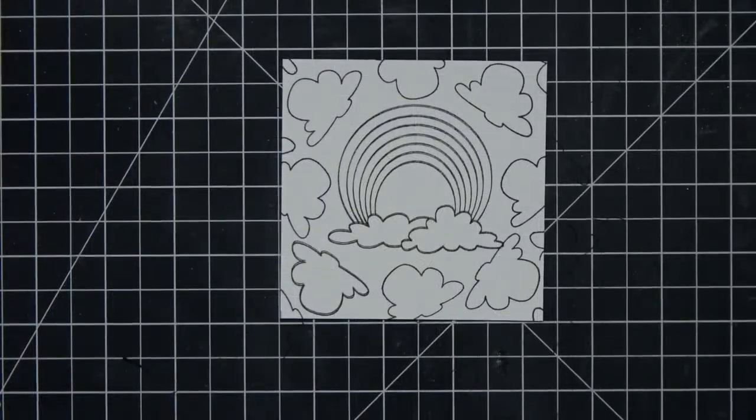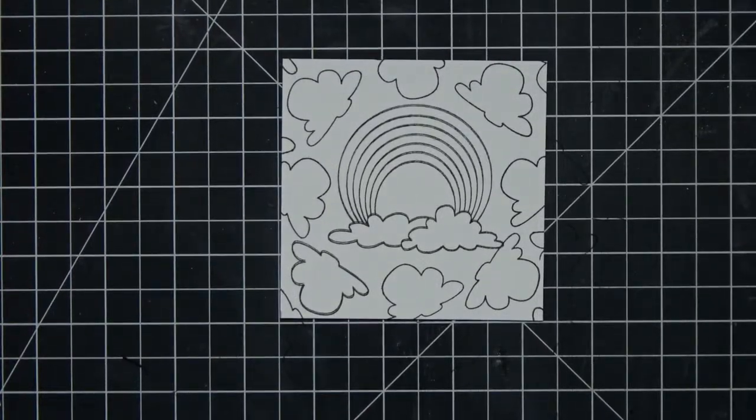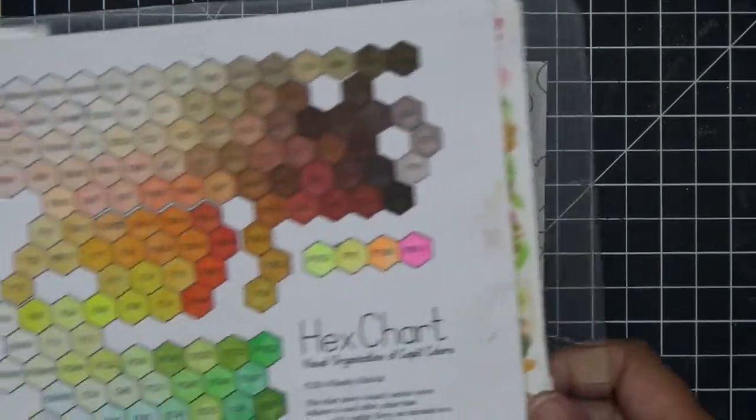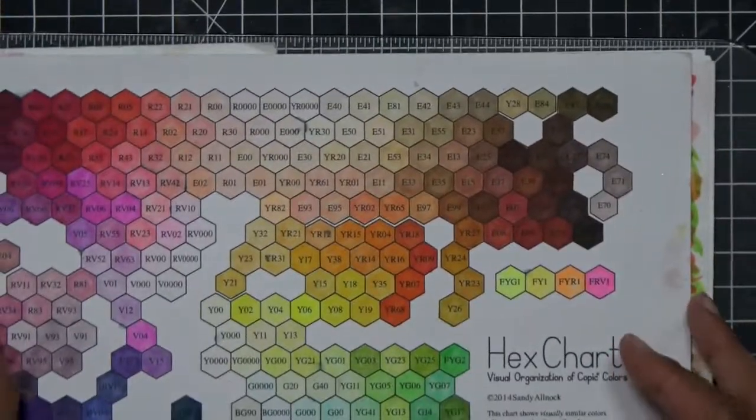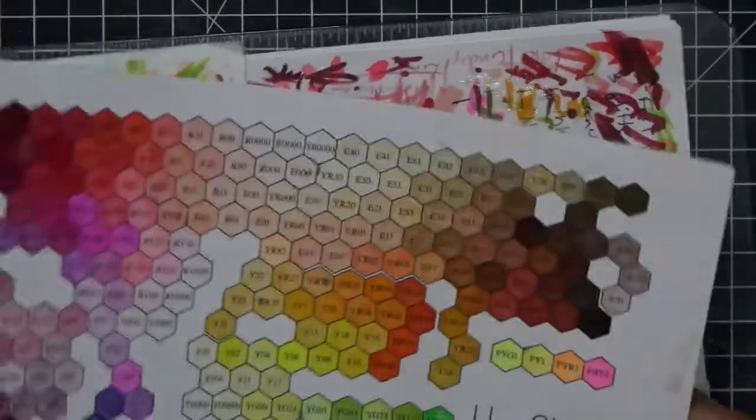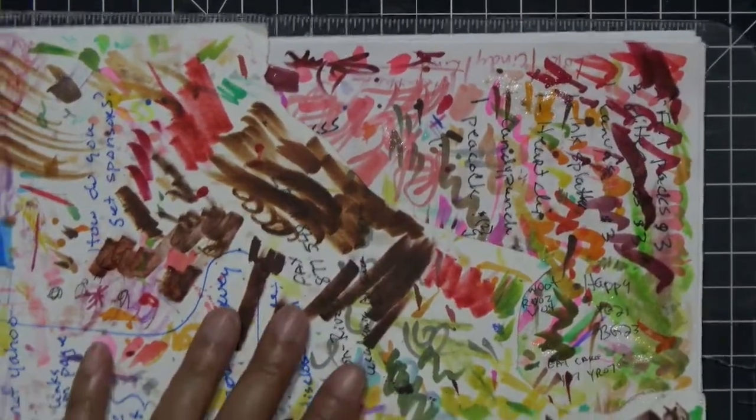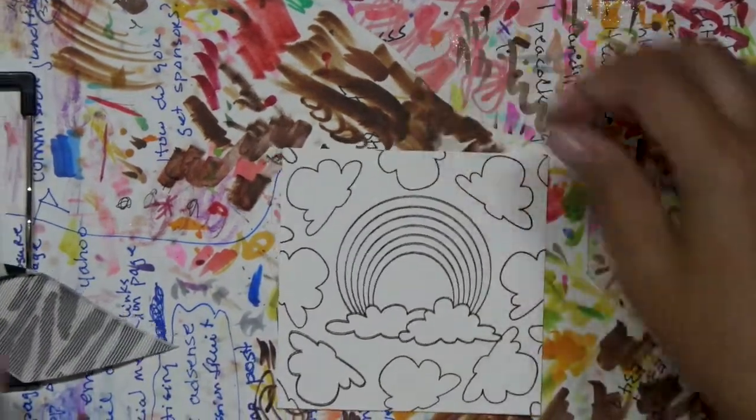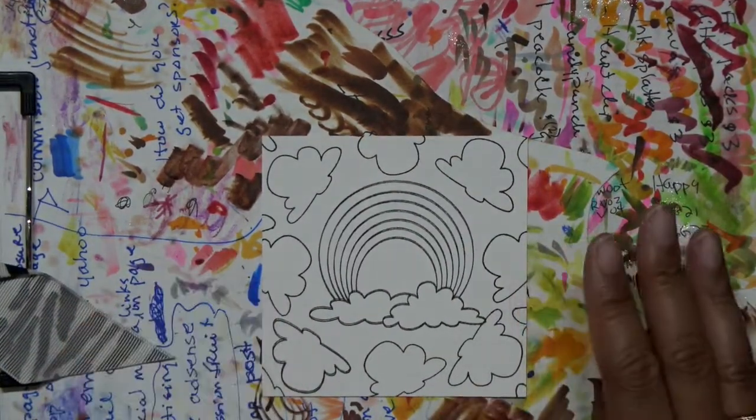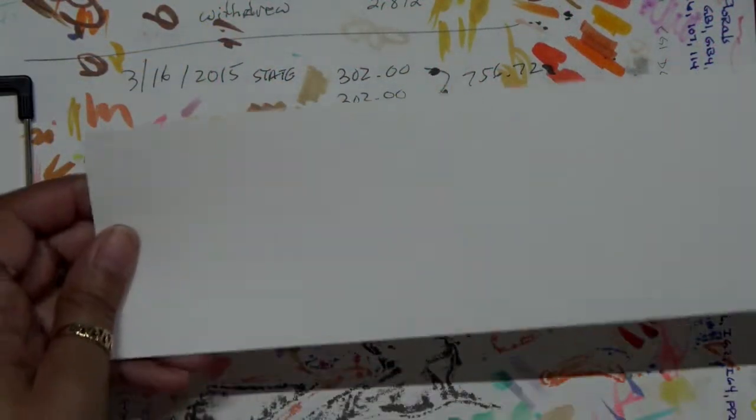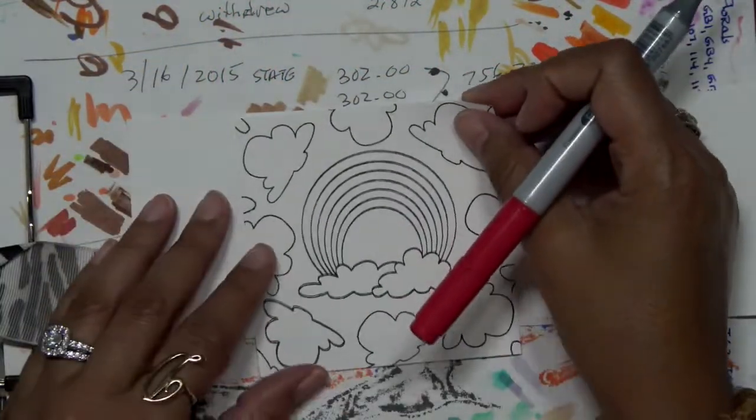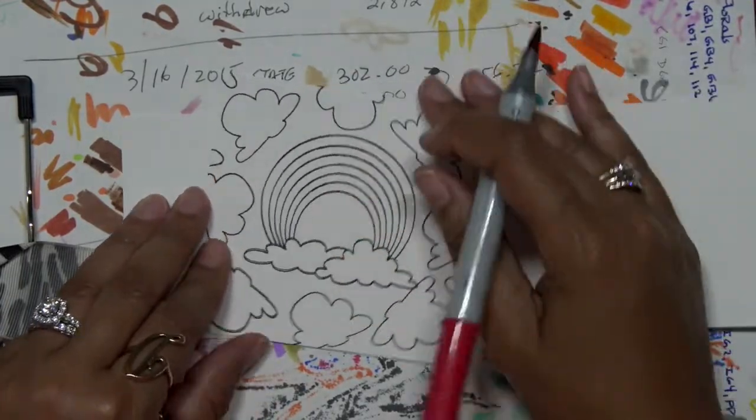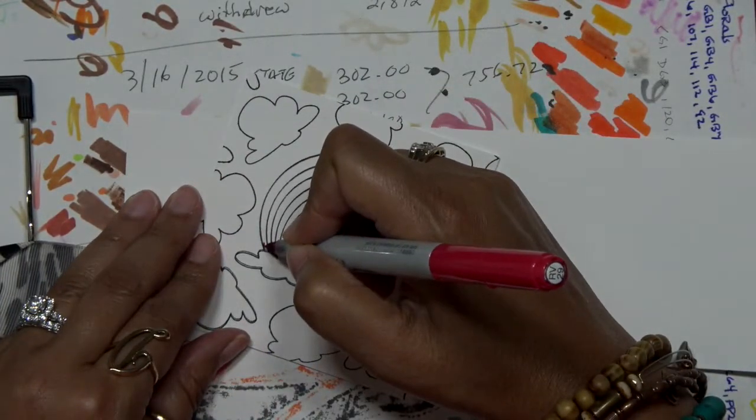All right so next we're going to do some Copic coloring. I always anytime I start Copic coloring I always go for my hex chart. I got this from Sandy Allnock. I'll put a link to it below and I always color on a clipboard that has some paper underneath it. It's a hot mess where I scribble off my markers or I kind of test it out to see what it looks like but I decided to get rid of all that because it was a little bit of a distraction.